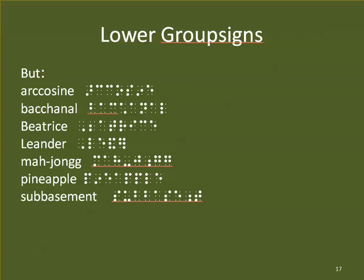Please be aware of the rules before you try to transcribe or teach in Braille, otherwise you'll be presenting something incorrectly. Some exceptions: arccosine is a compound word, so no CC contraction. Bacchanal — the CH contraction wins over CC. Beatrice — BE wins over EA. Leander — AND wins over EA. Mahjong — no GG because it's at the end of a word. Pineapple is a compound word, so no EA. Sub-basement — compound word, no BB.